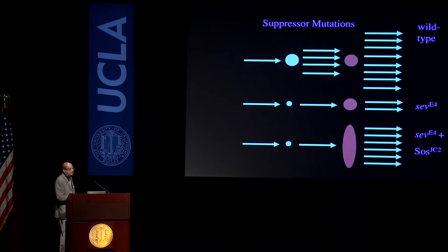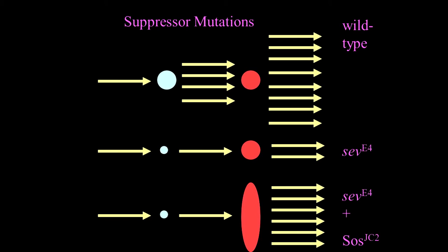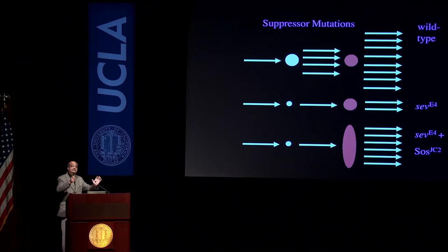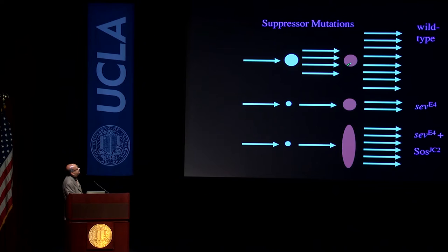We needed a cool name, so we called this Son of Sevenless, or SOS. We Drosophila geneticists lead such uninteresting lives that we have to give our genes interesting names. What is a suppressor mutation? Imagine a signal which leads to a final amplified signal — think of it as an electric current amplified by an amplifier. But it's not electrical; it's a chemical signal transduction signal.